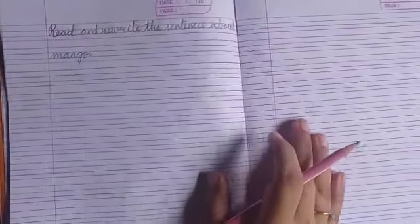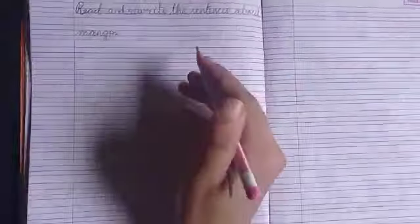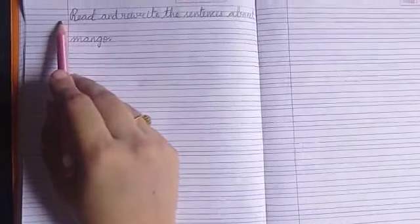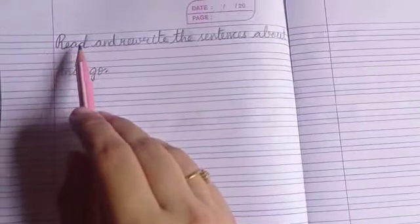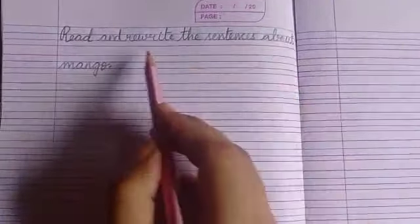Open your book, take the new page. In the left side you will write date under the margin in which date you are writing. And here you will write: read and rewrite the sentences about mango.